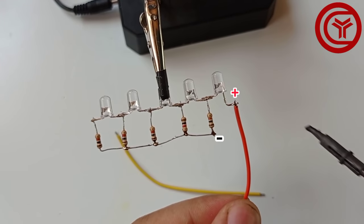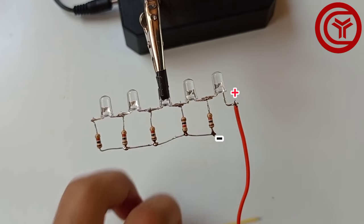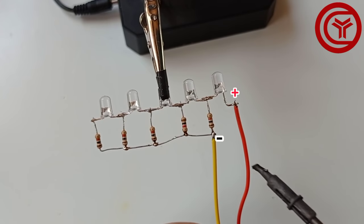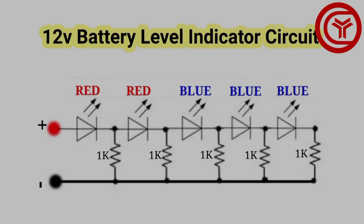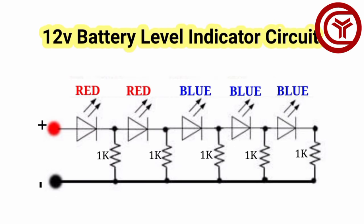Connect one wire on positive of LED, also connect other wire on resistors. Here is circuit diagram of the circuit.